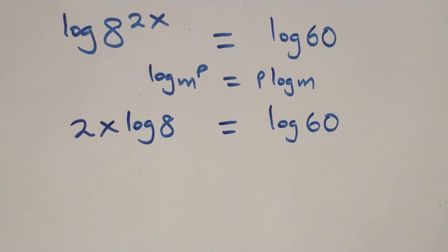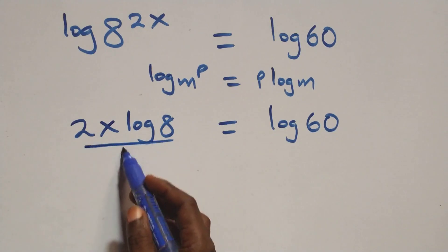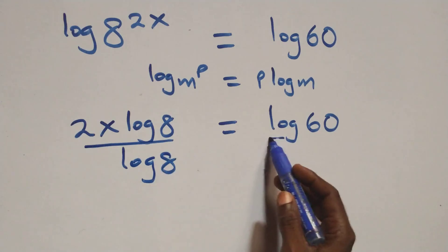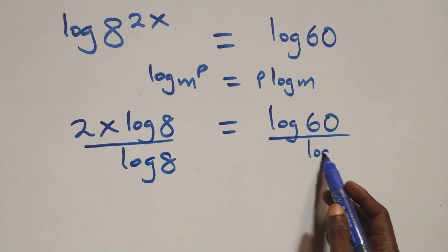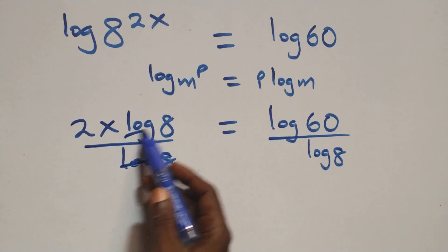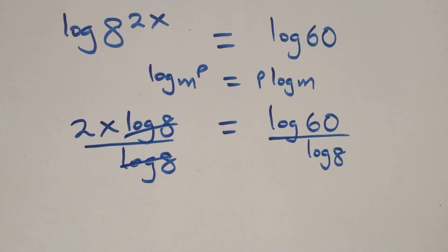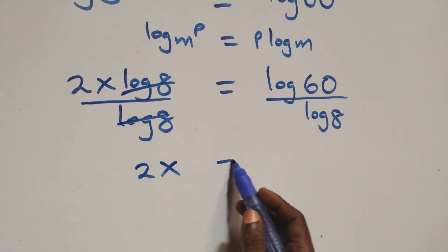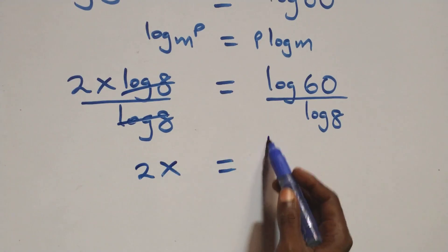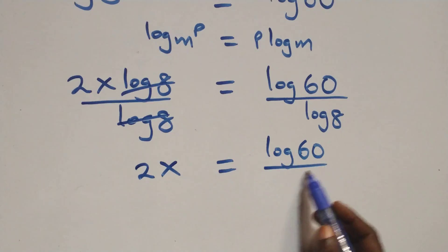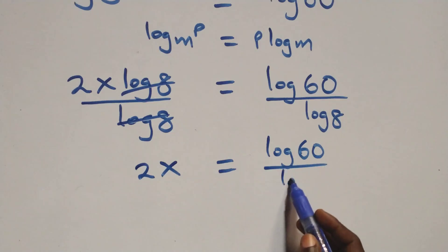The next step here, divide both sides by log 8. That is, divide this side by log 8, also divide this side by log 8. Which implies that log 8 cancels each other. We have 2x equals to log 60 over log 8.